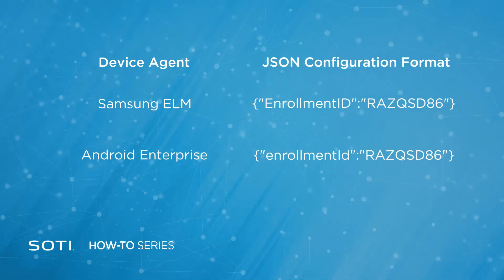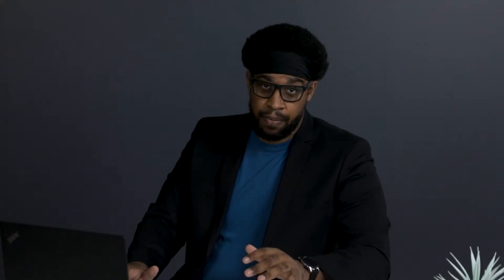Important to note: the format of the JSON configuration is strict and differs between the Samsung ELM Agent and the Android Enterprise Agent. Please follow the format for each device agent exactly as presented on the screen, where the alphanumeric value is replaced by the actual enrollment ID of the Add Devices Rule generated by MobiControl. When a JSON configuration is added to an EMM profile, that profile becomes restricted to a single Add Devices Rule, and you will need to create new profiles to enroll devices using another Add Devices Rule. We will enter the JSON configuration defined for the Add Devices Rule we created previously in MobiControl.